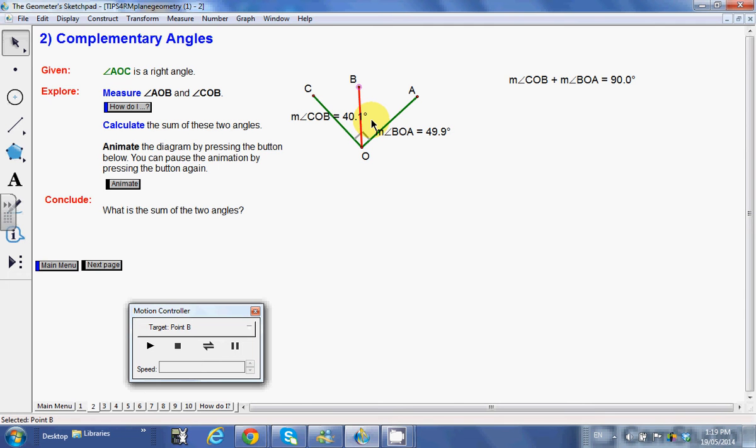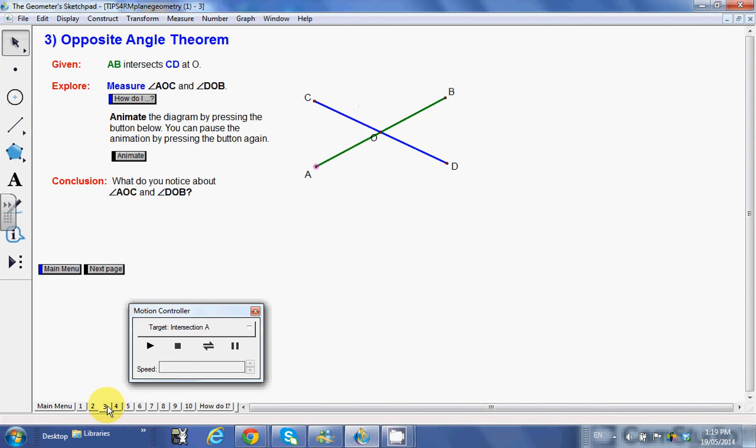Next one, this one's a neat one, the opposite angle theorem. So what it's actually trying to show is if this angle's maybe 30 degrees, what would this angle over on this side be?